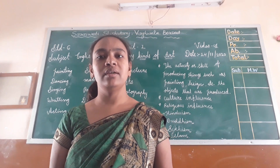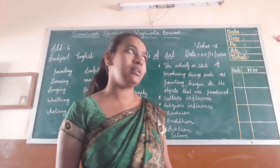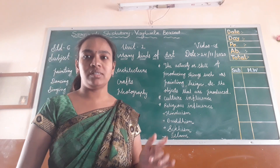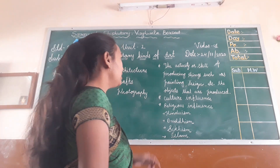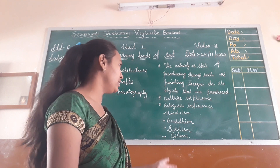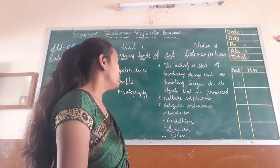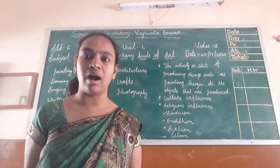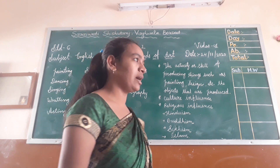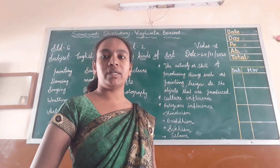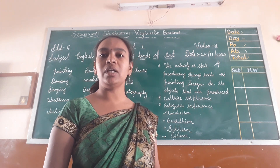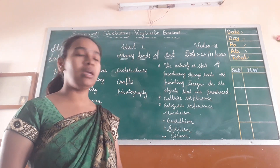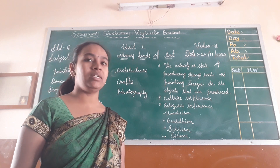What is the particular definition of art? The definition of art is: the activity or skill of producing things such as paintings, designs, etc., and the objects that are produced. So art is the activity or skill of producing something.